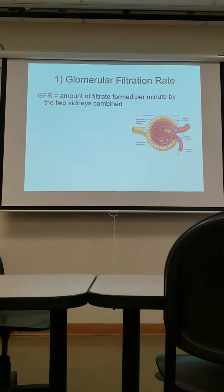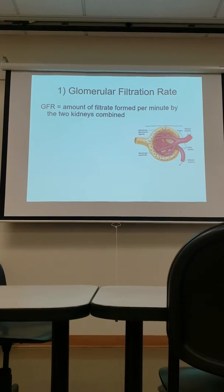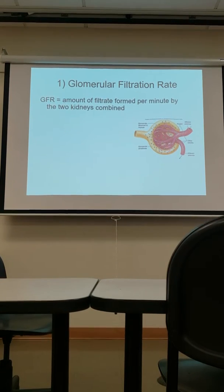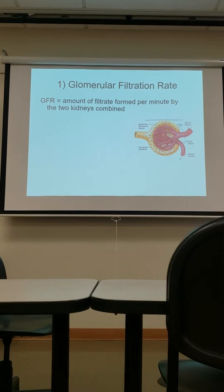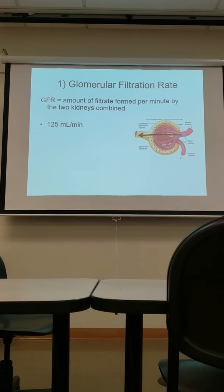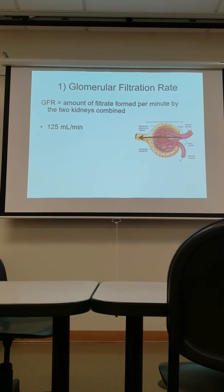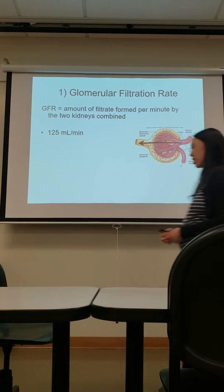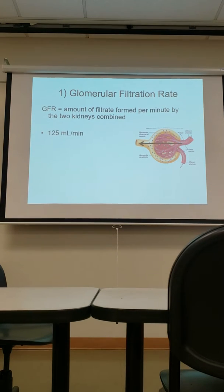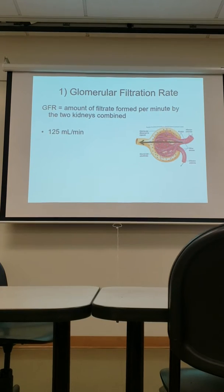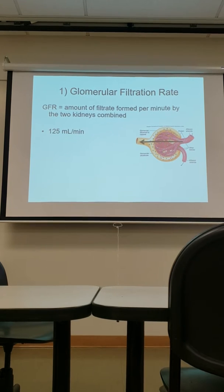It's really important to regulate the rate at which you filter. Remember, every minute about 1200 cc's of blood is filtered through your kidneys. In other words, the filtration rate — the amount of filtrate per minute by the two kidneys combined — out of that 1200 cc's, we get about 125 milliliters a minute of filtrate. In other words, 125 milliliters of fluid comes through into the tubule every minute.